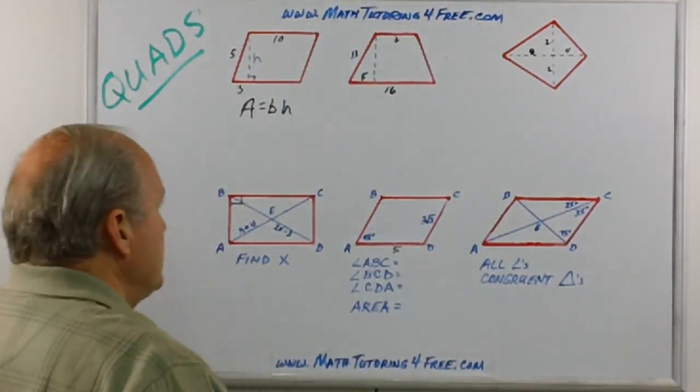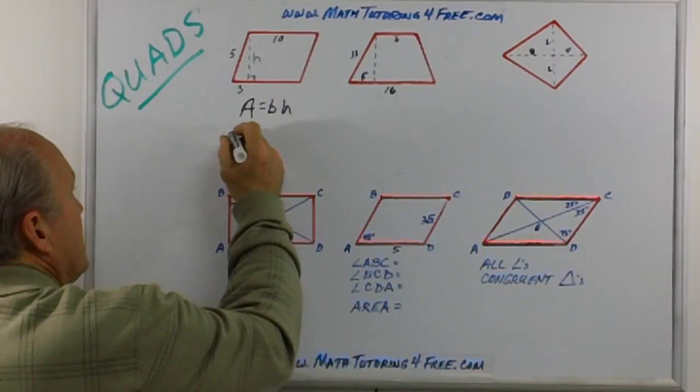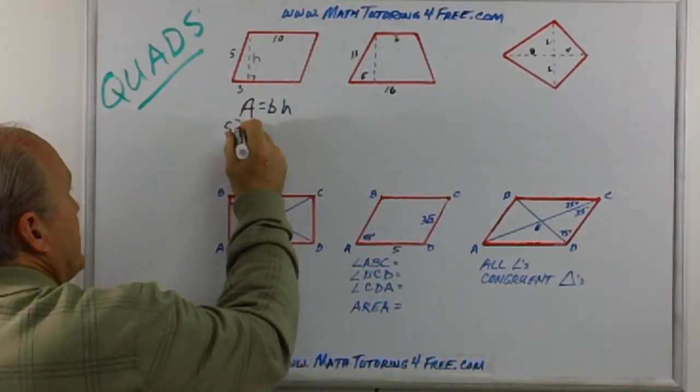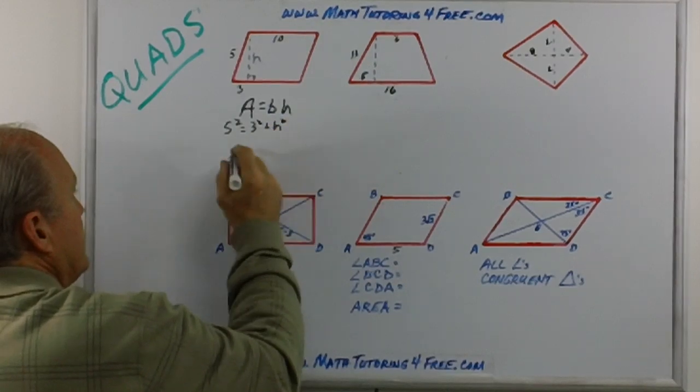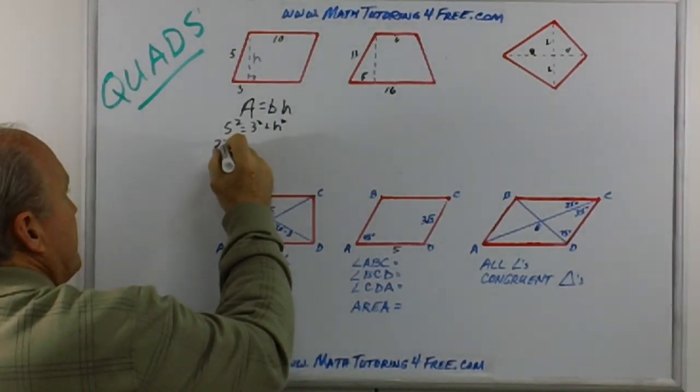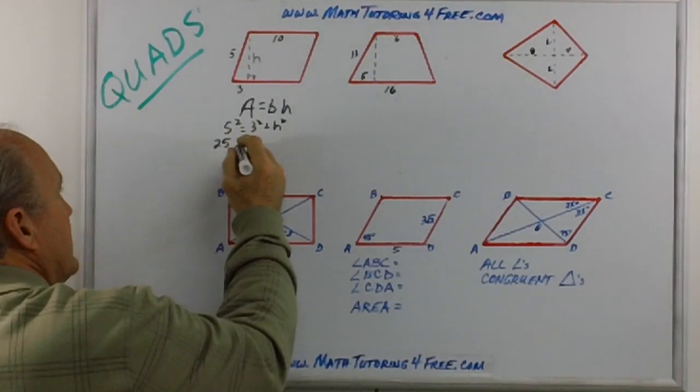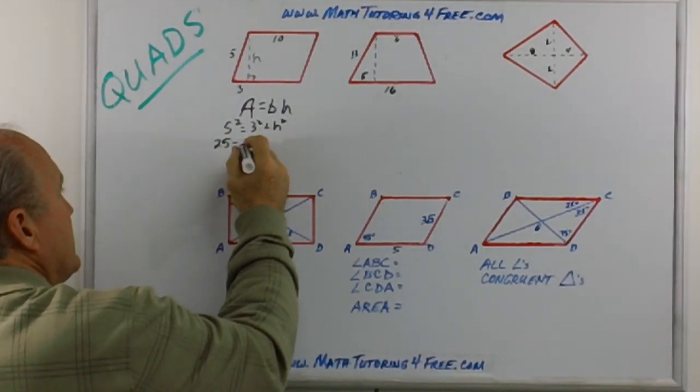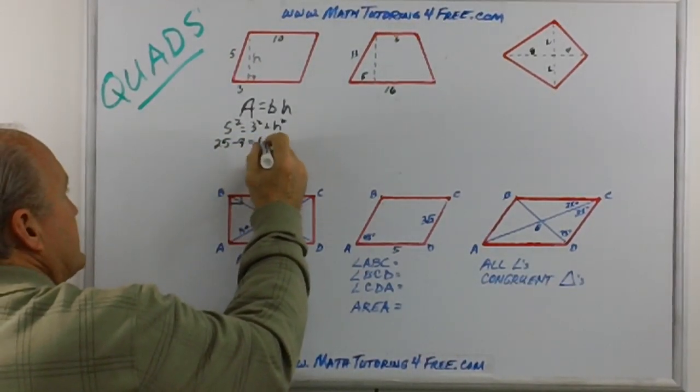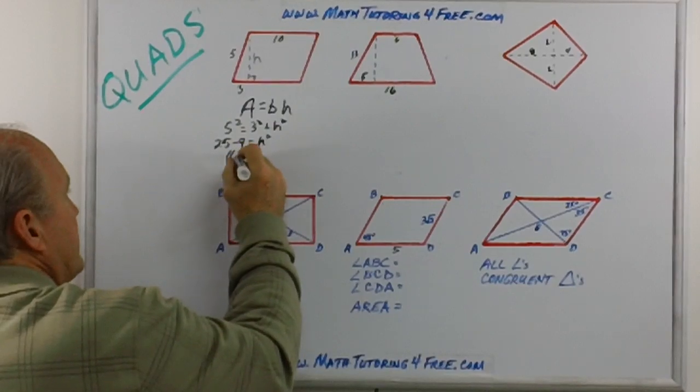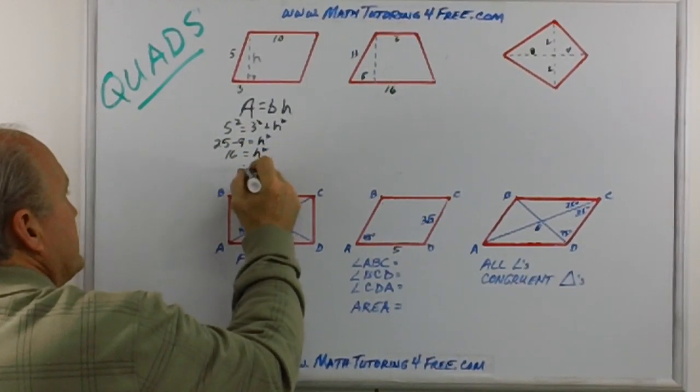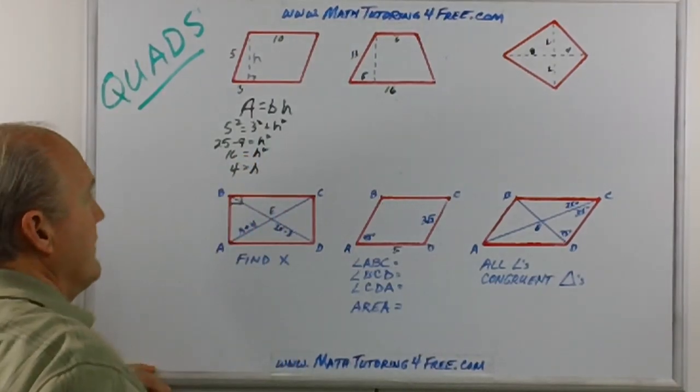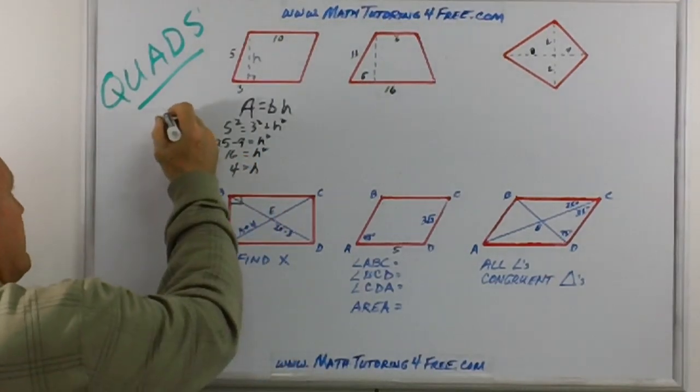Again the Pythagorean theorem. So 5 squared is equal to 3 squared plus h squared. 5 squared is 25. Might as well take that over right away. 3 squared is 9 is equal to h squared. 16 is equal to h squared. Then h is obviously equal to 4.